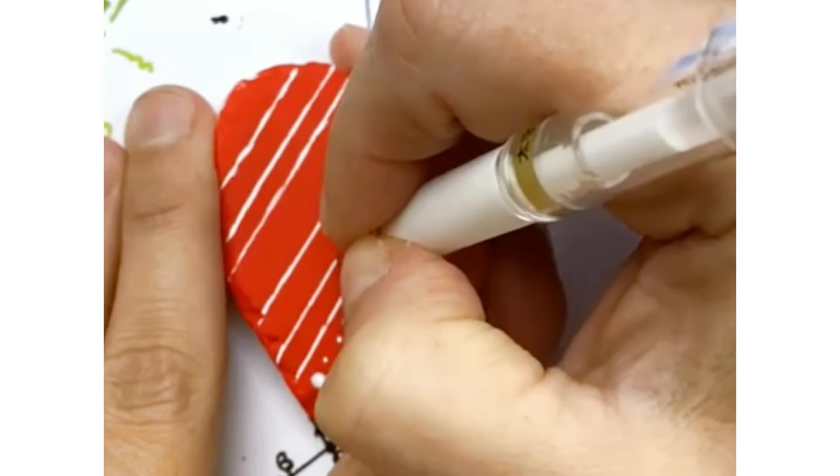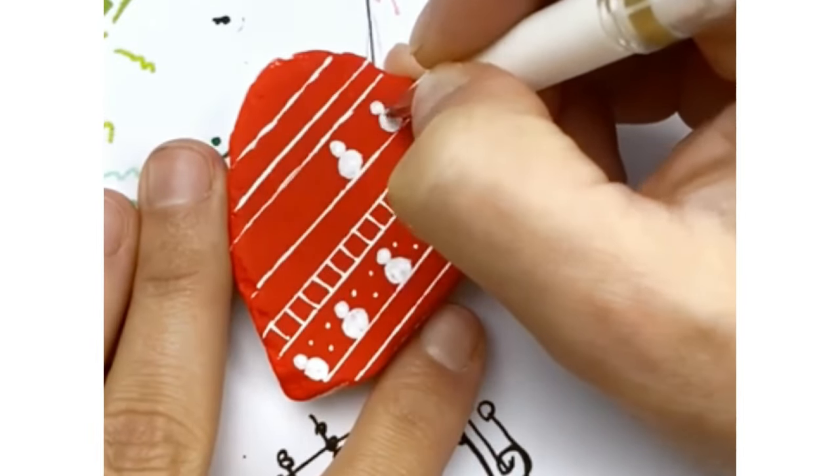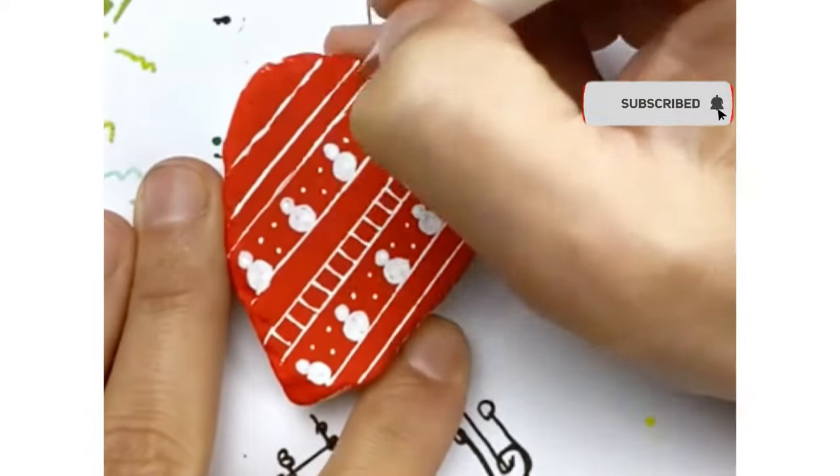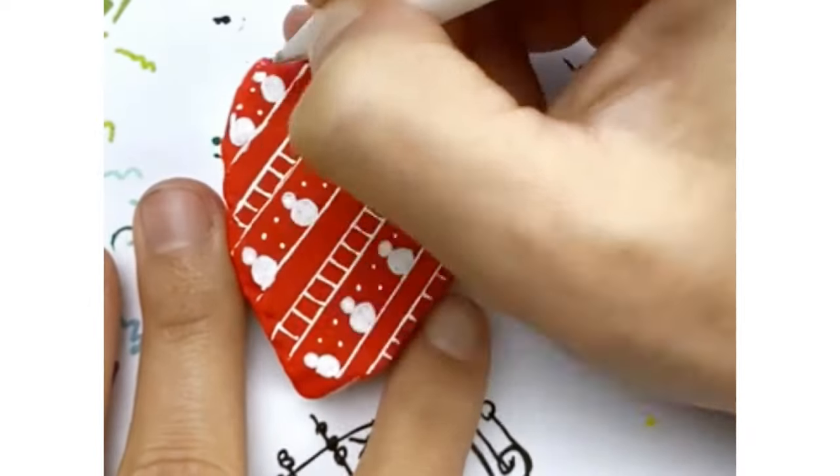Now on this one for the stitching I decided to do more of like a ladder style stitch, but again, like all of these tutorials, these can all be interchanged and you can create lots of fun different stitches and patterns inside your lines to create these fun sweater rocks.